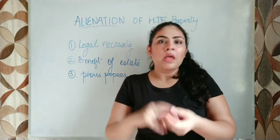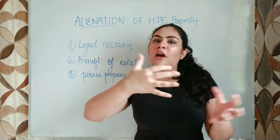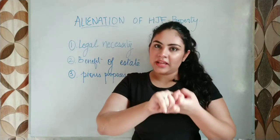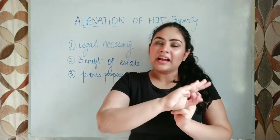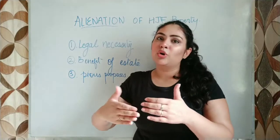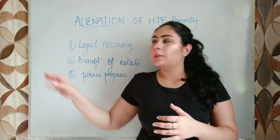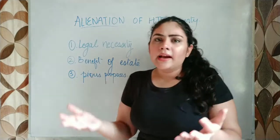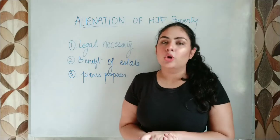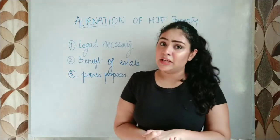If the Karta alienates the property without the consent of the other co-partners, those co-partners have two remedies. One is that they can seek a partition of the joint family property. The other remedy is that they can challenge the alienation in court. These are the remedies available to co-partners who are against the alienation made by the Karta.